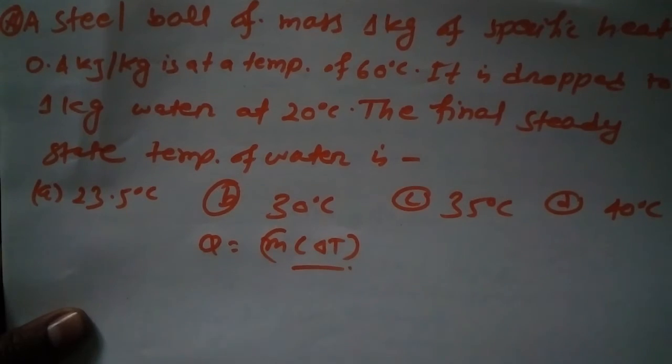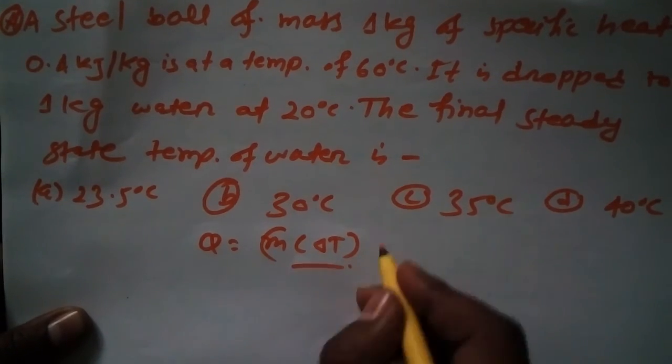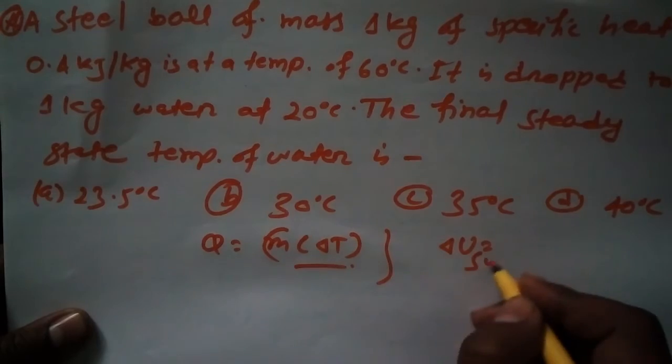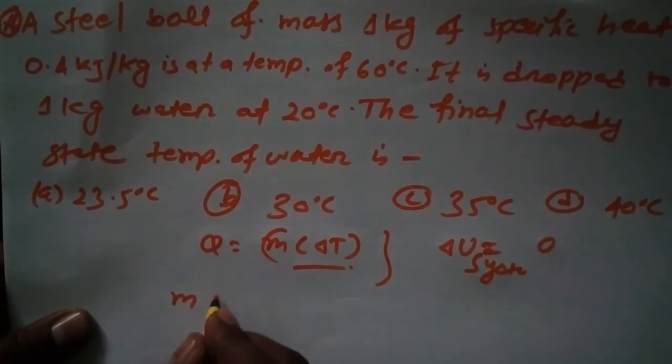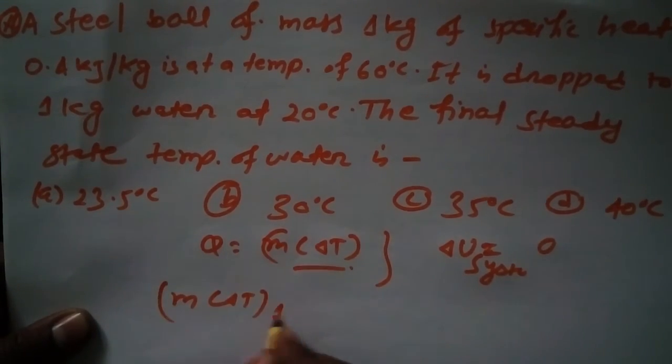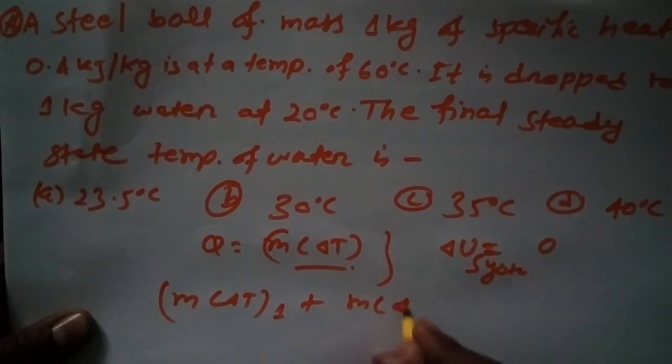So here delta U of the system, change in temperature of the system is zero. Therefore we can set equation mc delta T for condition 1 and mc delta T for condition 2 is equal to zero.